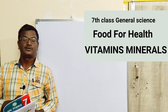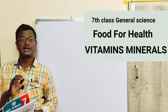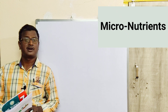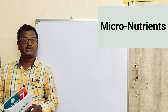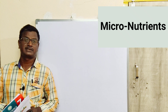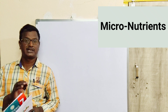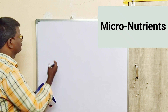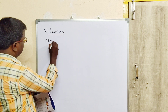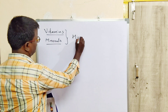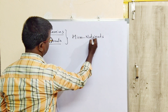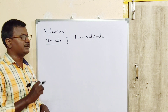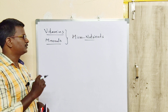Hello students, good morning. Today I would like to explain vitamins and minerals in the first lesson of seventh class, Food for Health. Vitamins and minerals are both called micronutrients because we consume very small amounts of these nutrients — only in micrograms. Because our body needs very less amounts, these are called micronutrients.